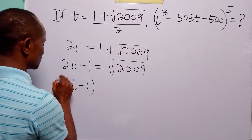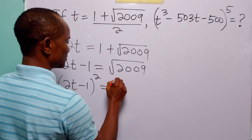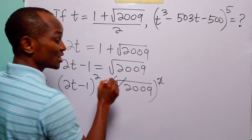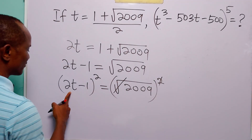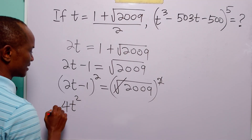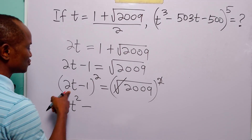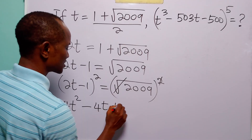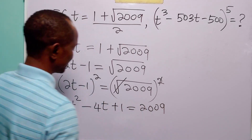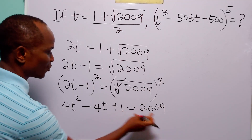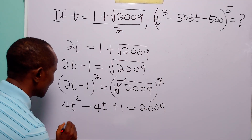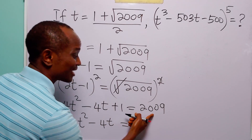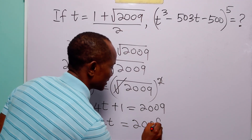So we have (2t − 1)² is equal to 2009. The square takes care of the square root. Expanding, we have 4t² minus 2 times 2t times 1, that is 4t, and then minus 1 squared, which gives plus 1. This is equal to 2009. Let us subtract 1 from both sides of this equation. When we do that, we have 4t² − 4t is equal to 2009 − 1, which of course is 2008.